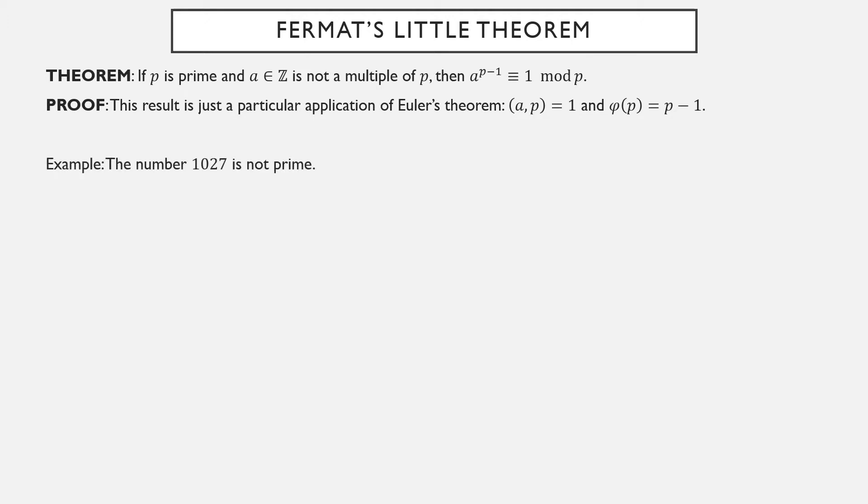We can use this to see that the number 1027 is not prime. 1027 is not divisible by 2, 3, 5, or 11, all of which have quick divisibility tricks. But beyond this point it might get kind of difficult to try to factor it by hand.